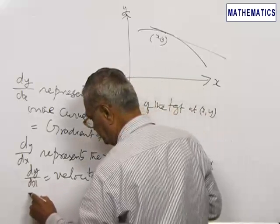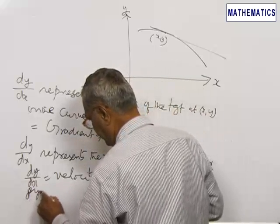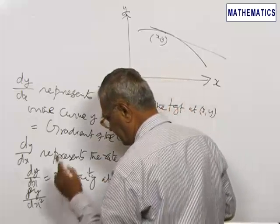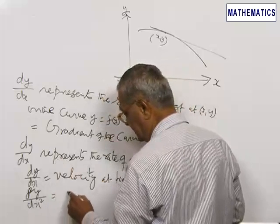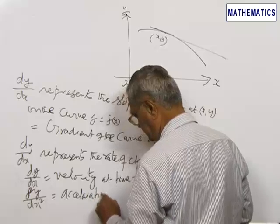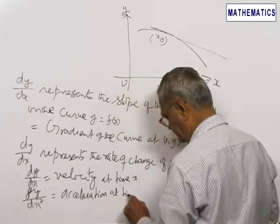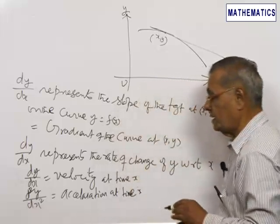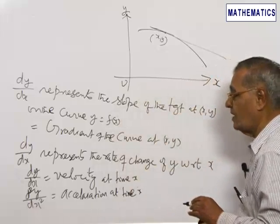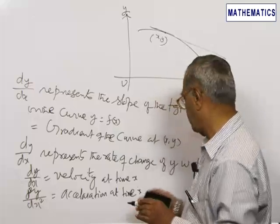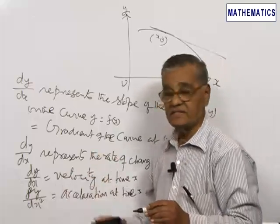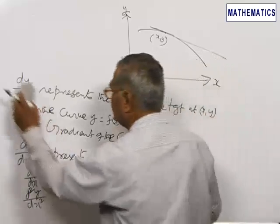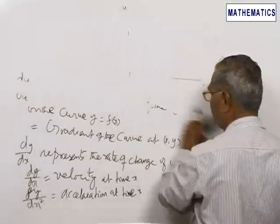If we go into the second derivative, the first derivative is a continuous function and we find the derivative of that first derivative — it is called the second derivative, denoted by d²y by dx². This represents the acceleration of the point at time x. So there are several meanings for dy by dx: one is the slope, the other is the rate of change with respect to the variable x. If x represents time, dy by dx represents the velocity and the second derivative represents the acceleration.